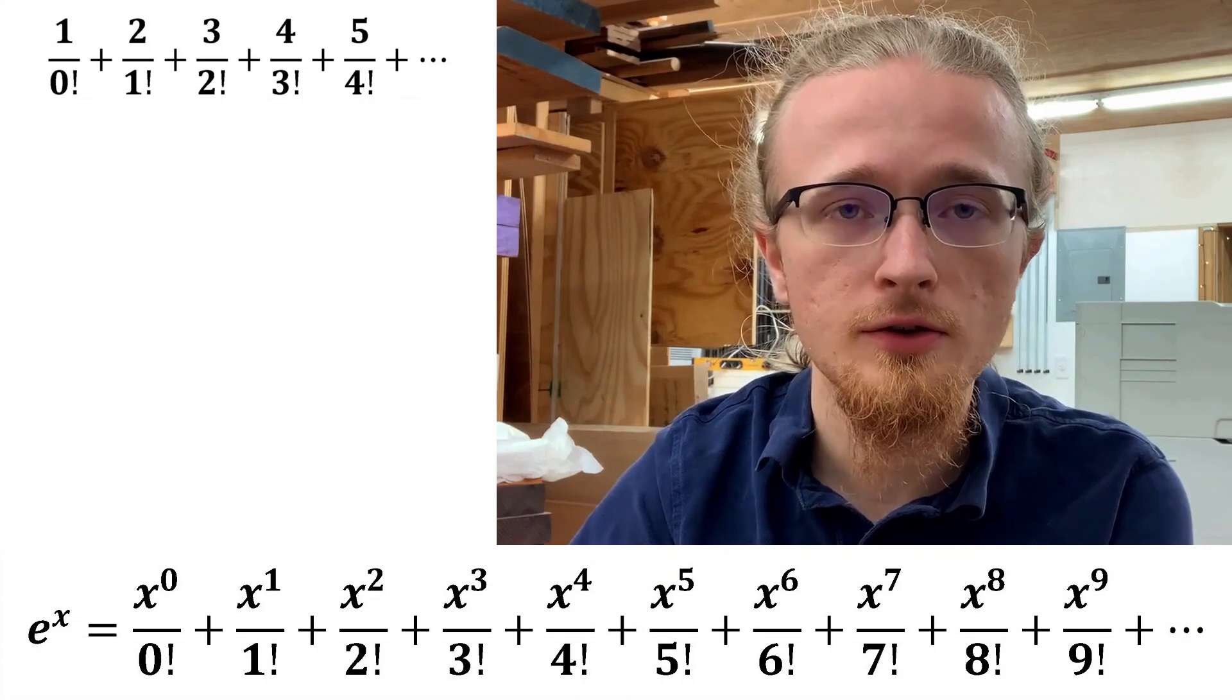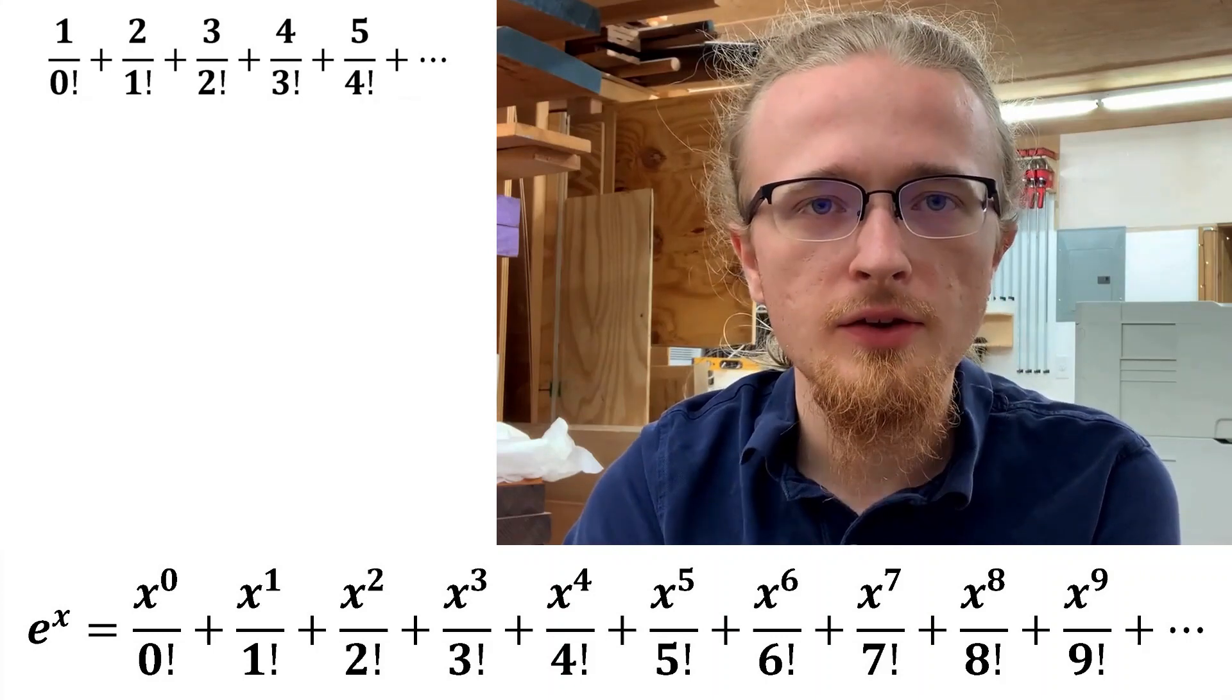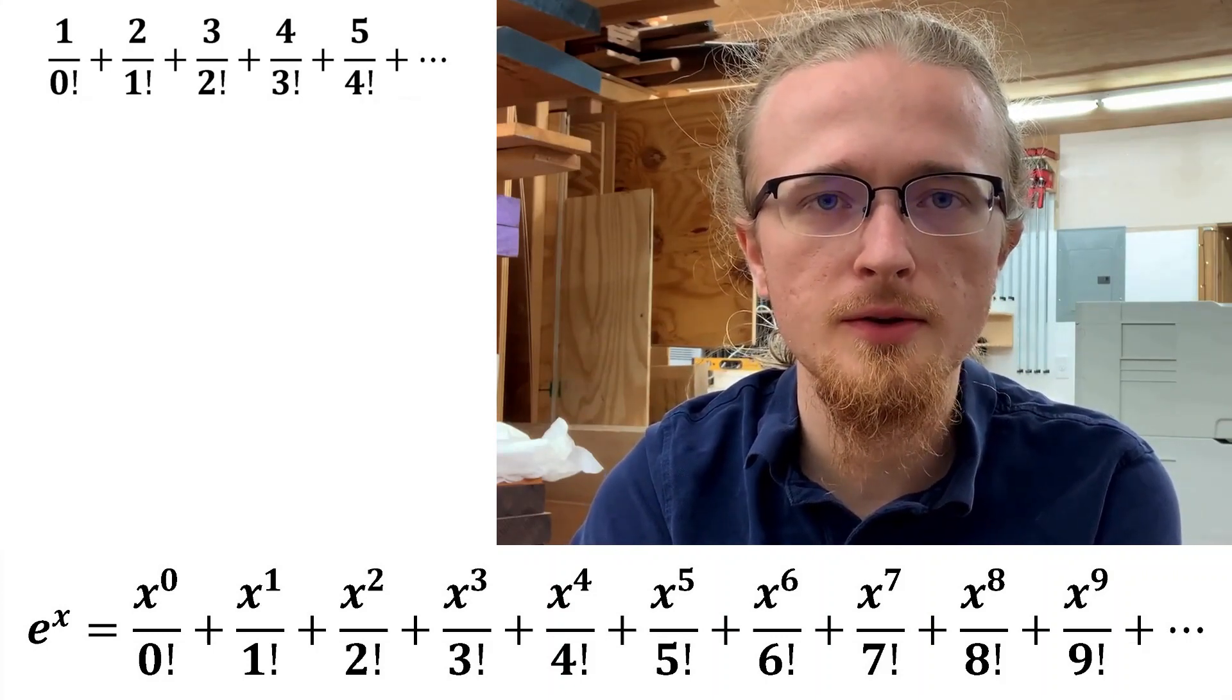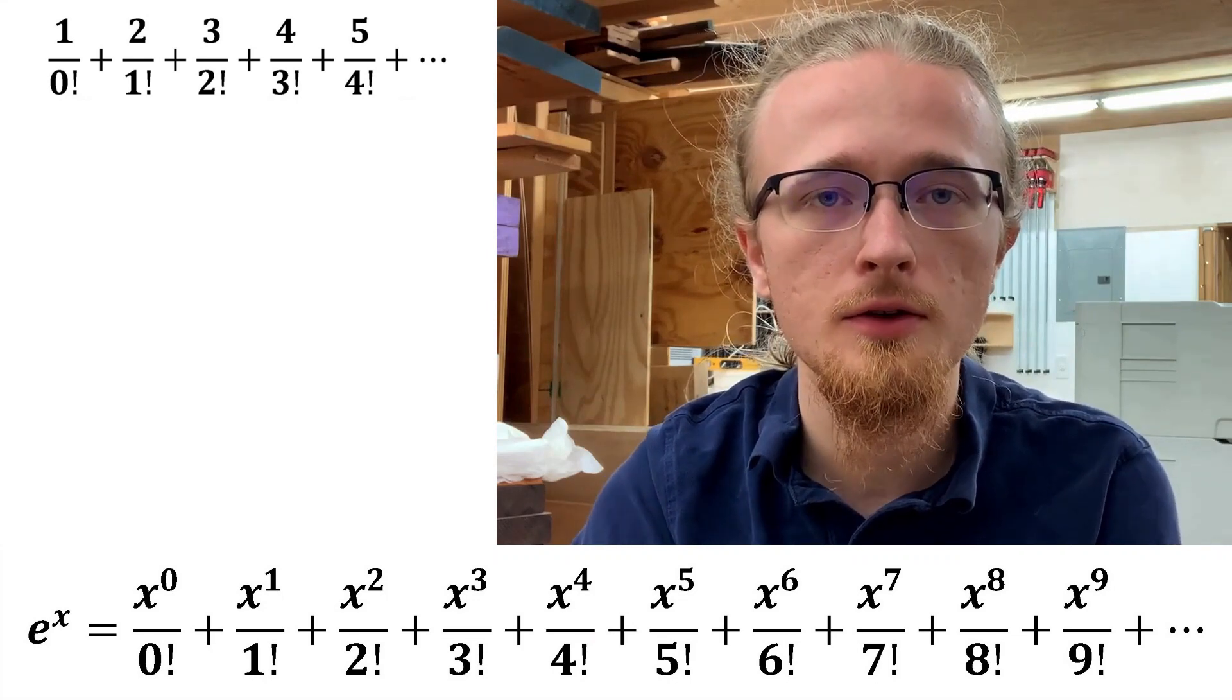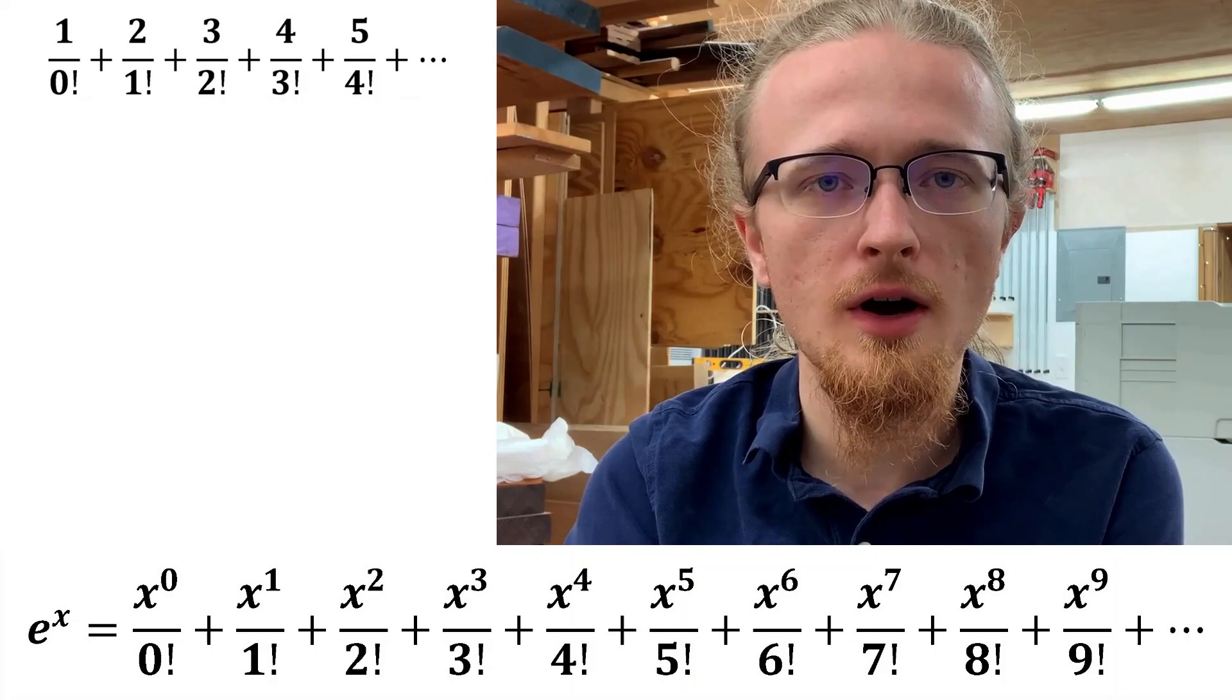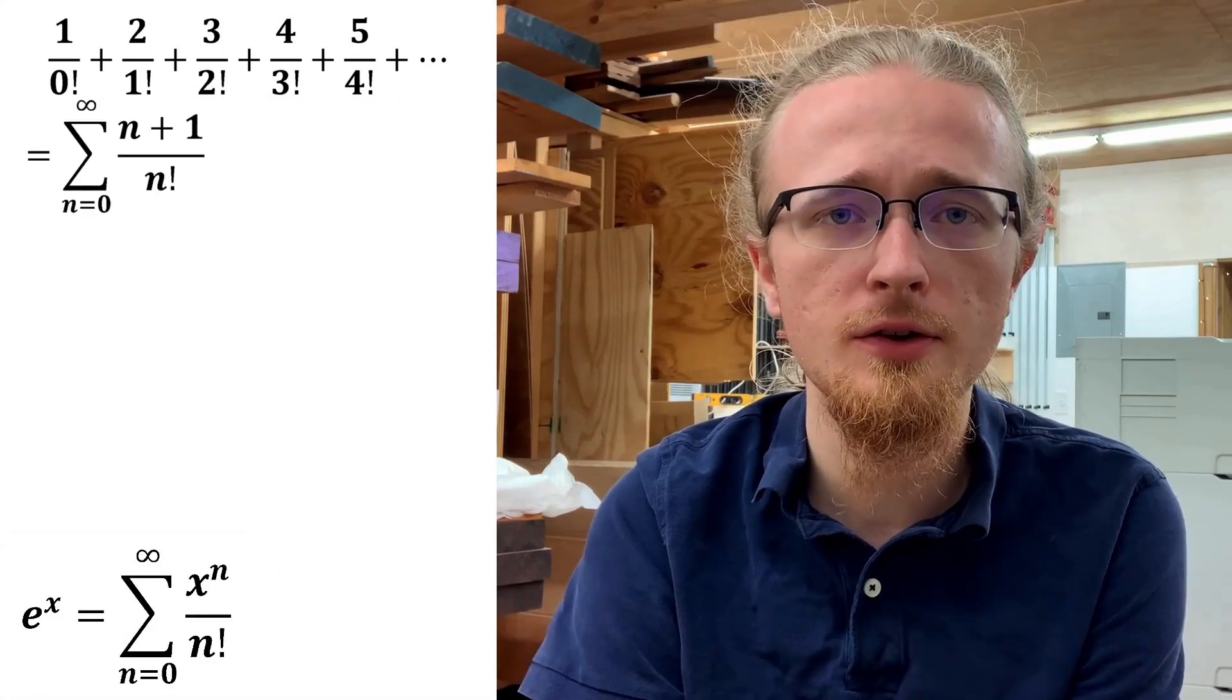It turns out that the instinct to try and relate the infinite series we're trying to sum to the natural exponential is the right idea. It's just that the correct relationship between the natural exponential Taylor series and the series we're trying to sum is a bit more complicated than simply selecting a particular value for x. It's easiest to figure out the relationship if we write everything in summation notation.